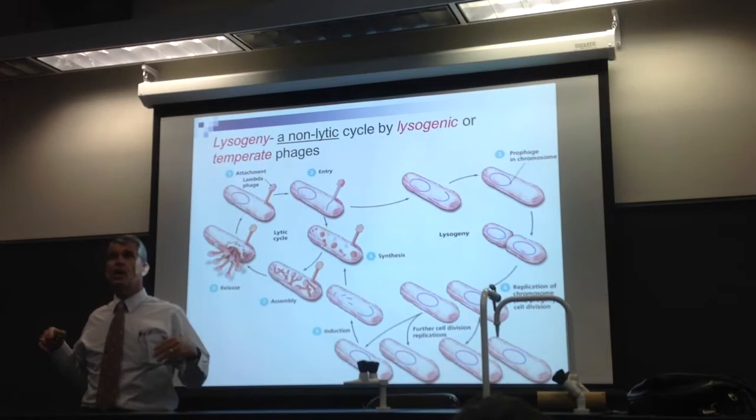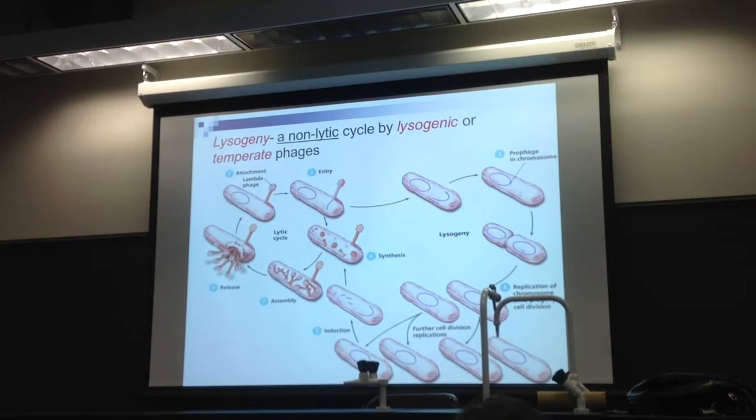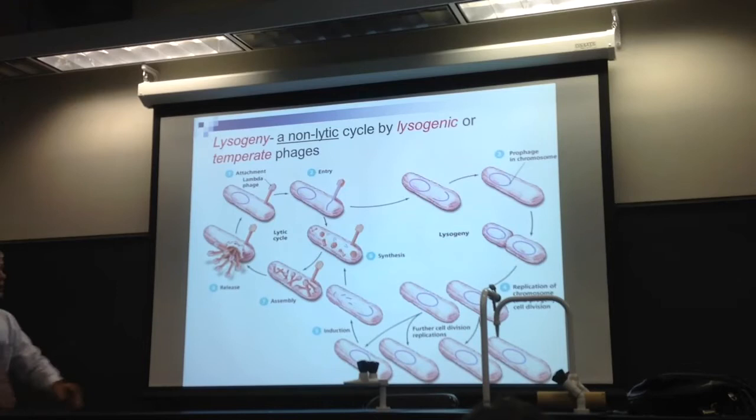Give me another human viral infection that has the same kind of thing. Chickenpox. What do you get from chickenpox? Shingles. Shingles are chickenpox viruses that are in the neurons, the neural tissues of our bodies, and they lay dormant. Very, very similar to this.